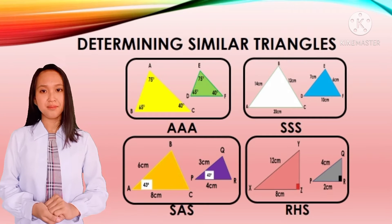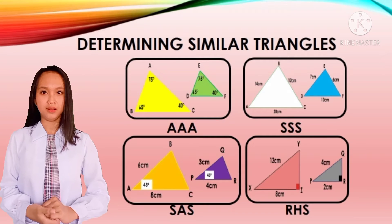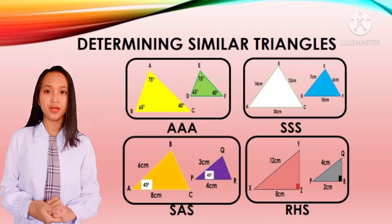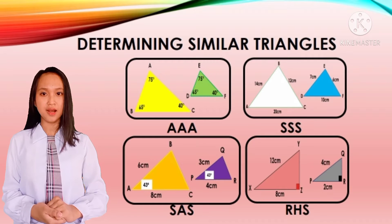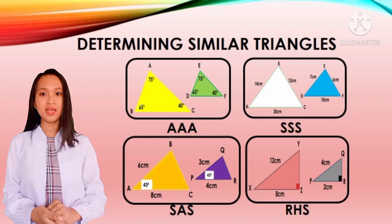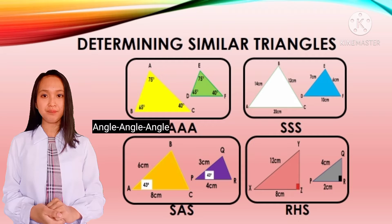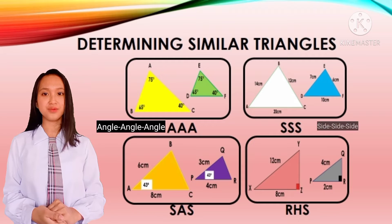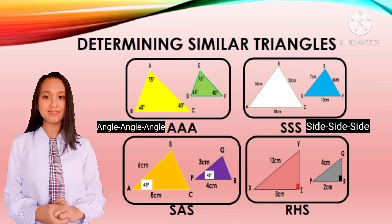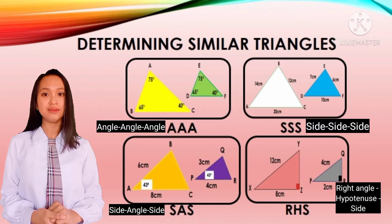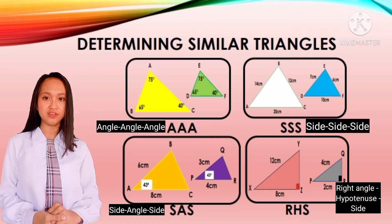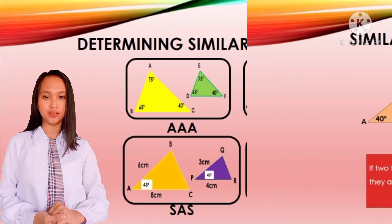Determining similar triangles: we can prove that these two triangles are similar by using the AAA rule, SSS rule, SAS rule, or RHS rule, depending on the given triangle.